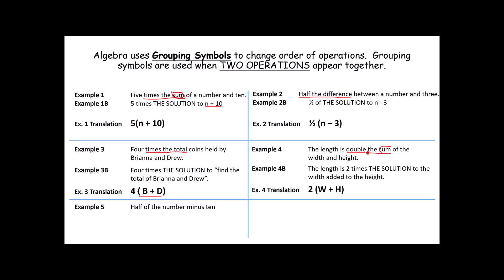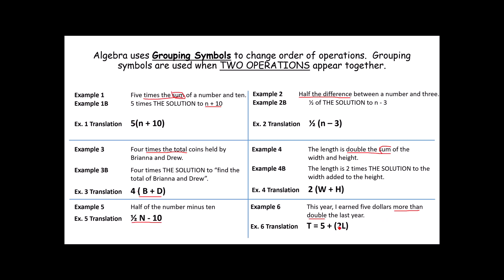'Half of the number minus ten' — I got a little tricky there. Notice this just says half of a number minus ten, but there is no second operation telling us to do the subtraction first. 'Half the difference of a number and ten' would say do the subtraction first. Since nothing indicates the subtraction had already been done, I just followed normal order of operations: (1/2)n - 10. Last: 'This year I earned five dollars more than double last year.' Notice more than and double — two operations together: more than is addition, double is multiplication. So this would be 5 + 2(last year) = this year. Keep in mind that order of operations says multiplication is done first anyway, so the parentheses are not strictly necessary.